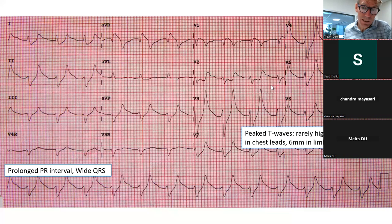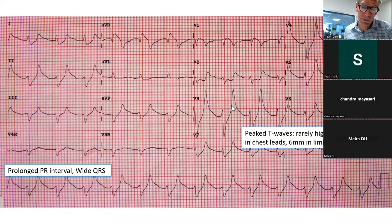An ECG showing hyperkalaemia demonstrates extremely peaked T waves — in this case 18 mm in chest leads V1–V6 (normal up to 10 mm) and more than 6 mm in limb leads — along with a prolonged PR interval and wide QRS complex. This is very serious hyperkalaemia requiring urgent therapy: calcium gluconate, insulin with glucose, and sodium bicarbonate. Without lowering the potassium, cardiac arrest can happen quite suddenly.